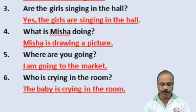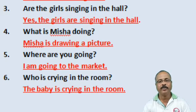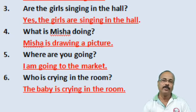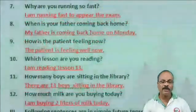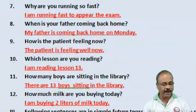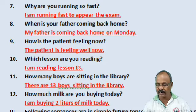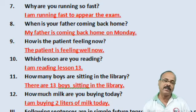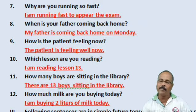Number 5: 'Where are you going?' Answer: I am going to the market. Number 6: 'Who is crying in the room?' Answer: The baby is crying in the room. Number 7: 'Why are you running so fast?' Answer: I am running fast to appear in the exam.